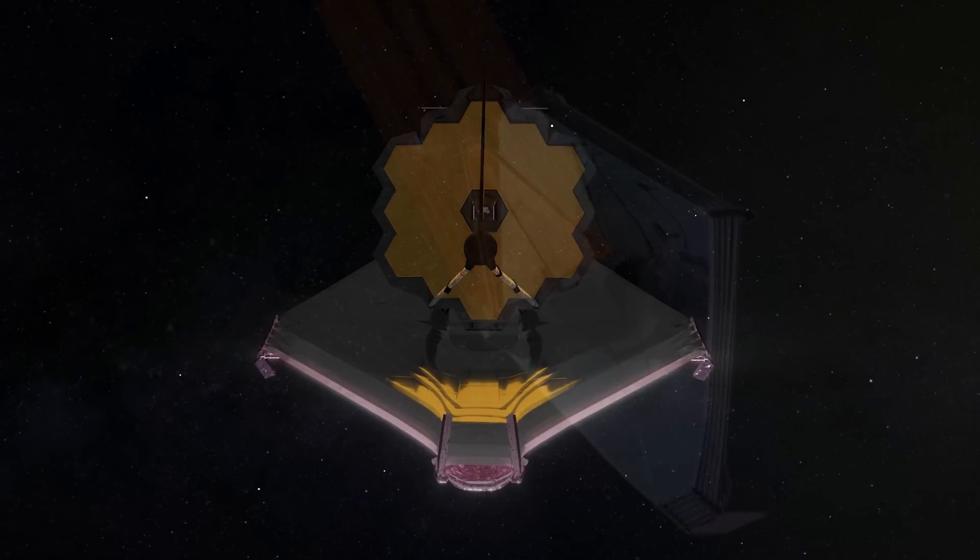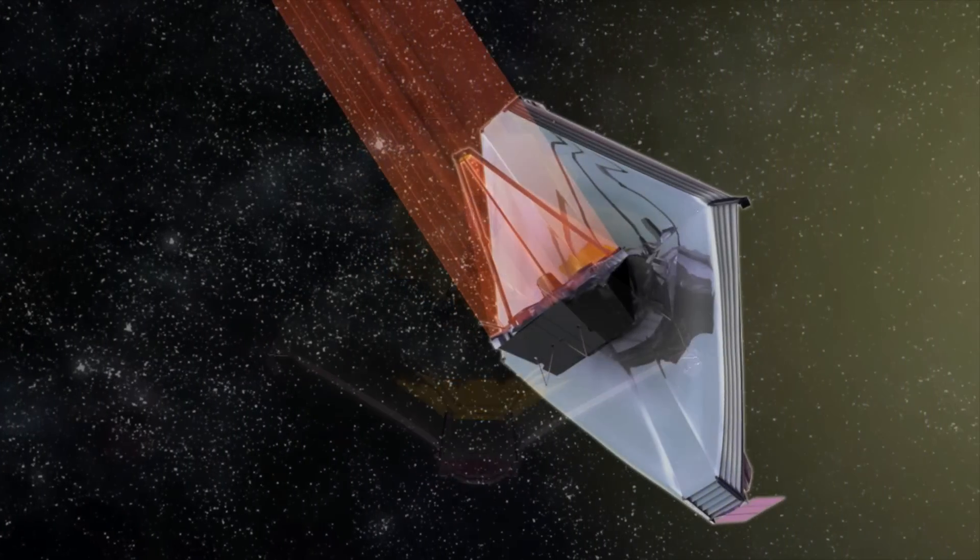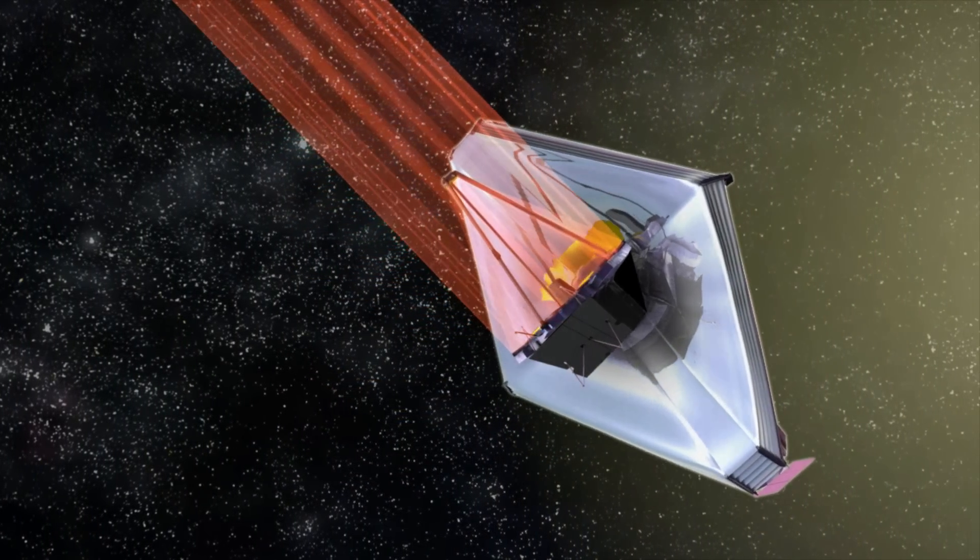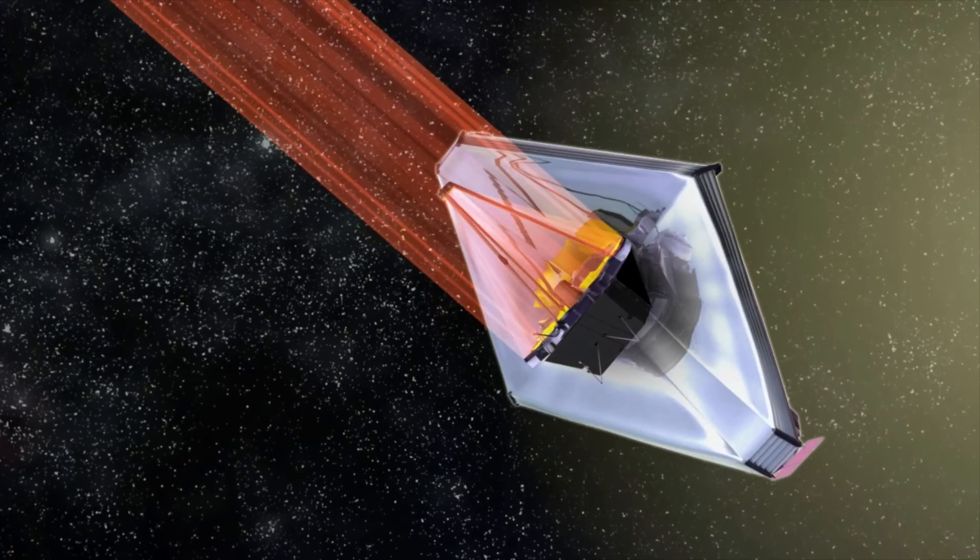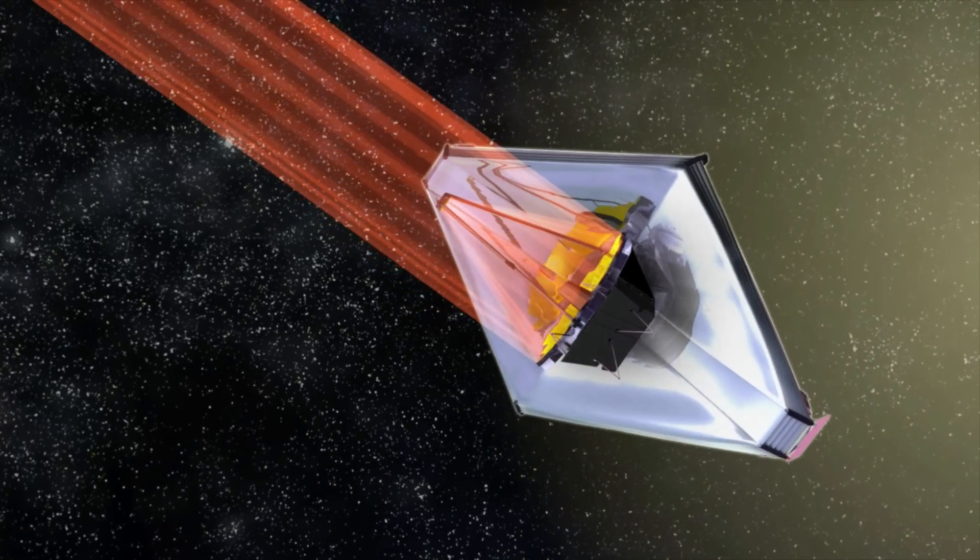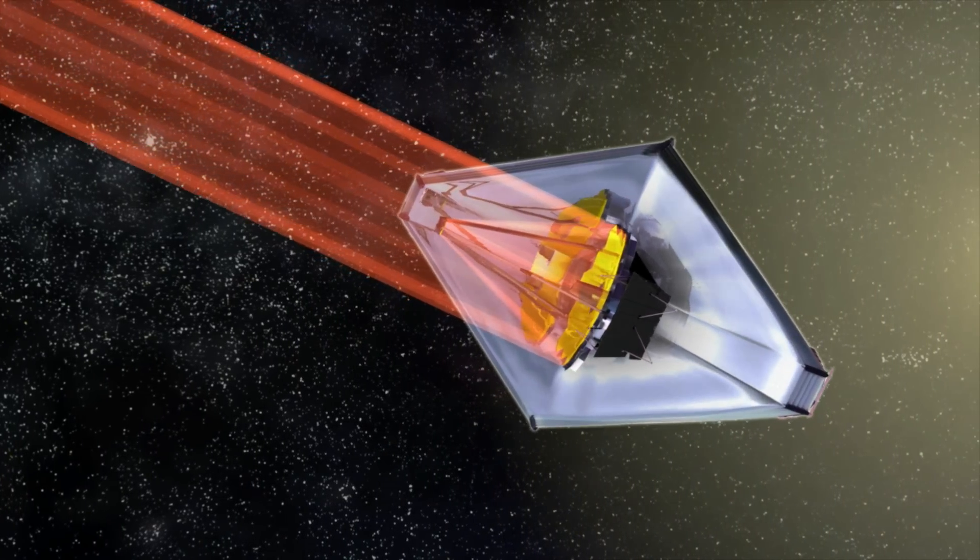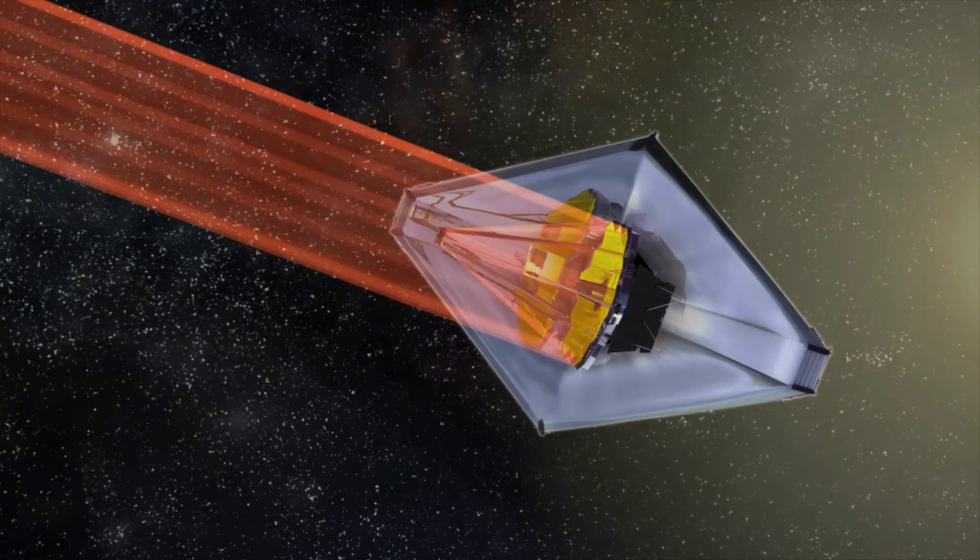They go on to say, Webb's mirror was engineered to withstand bombardment from the micrometeoroid environment at its orbit around Sun-Earth Lagrange point. Furthermore, they say Webb's capability to sense and adjust mirror positions enables partial correction for the result of impacts.